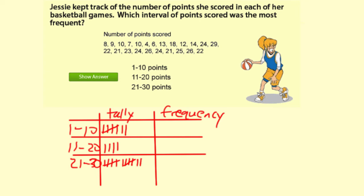And then to finish the frequency table, I just need to put the total number of tally marks. So 1 through 10, there are 7, so that's your frequency. 11 through 20, there were 4, and 21 through 30, there were 12.